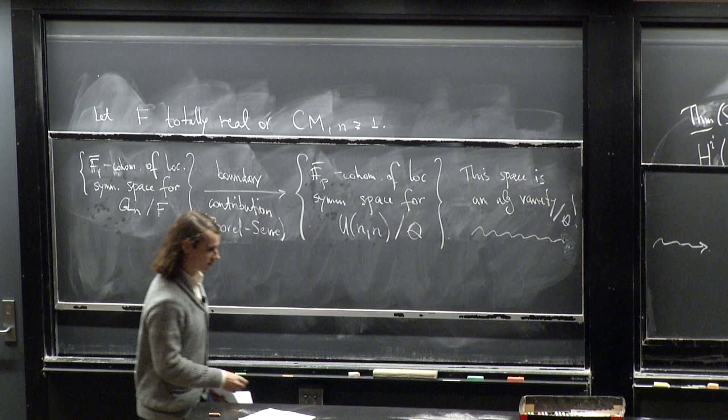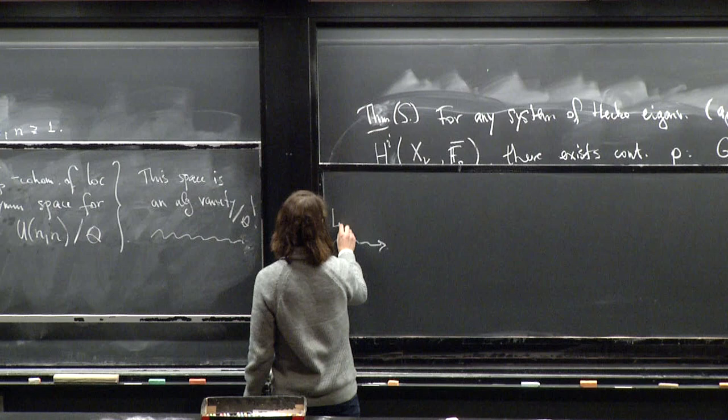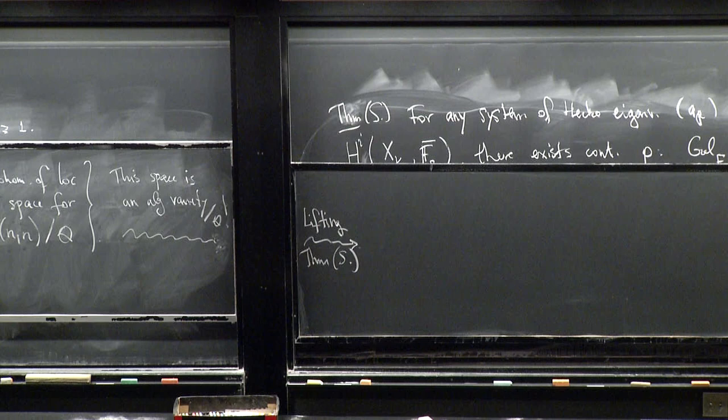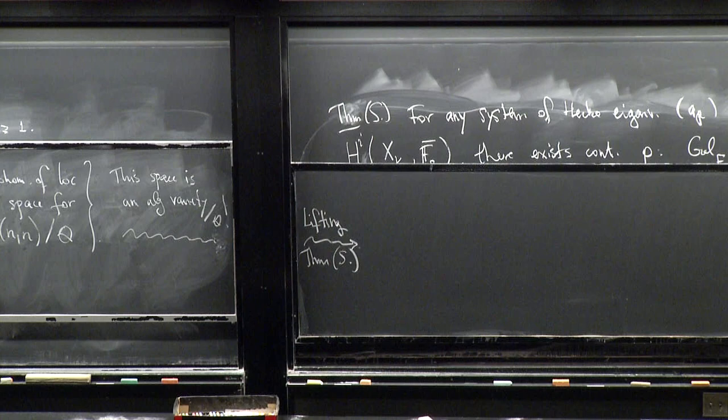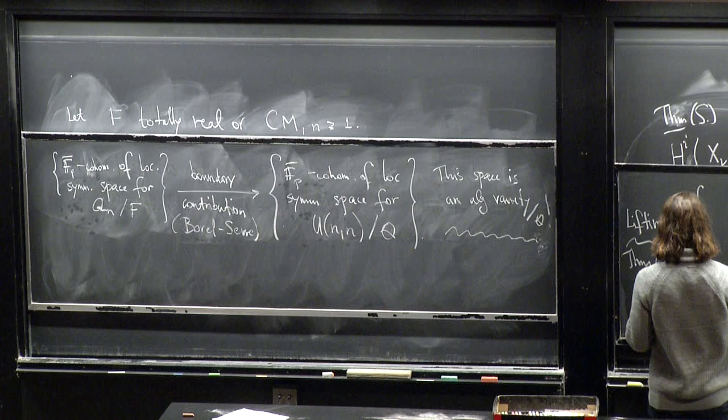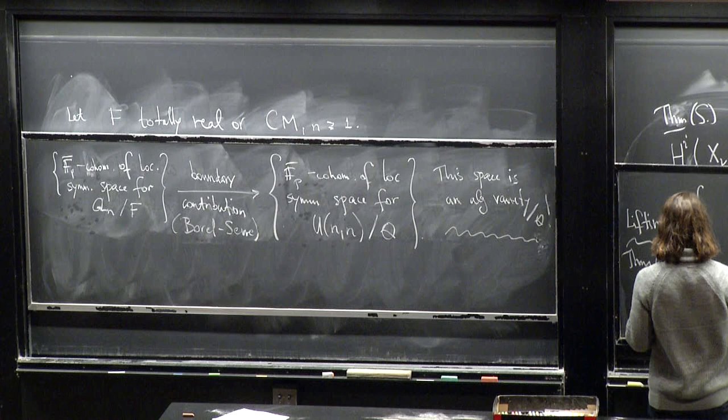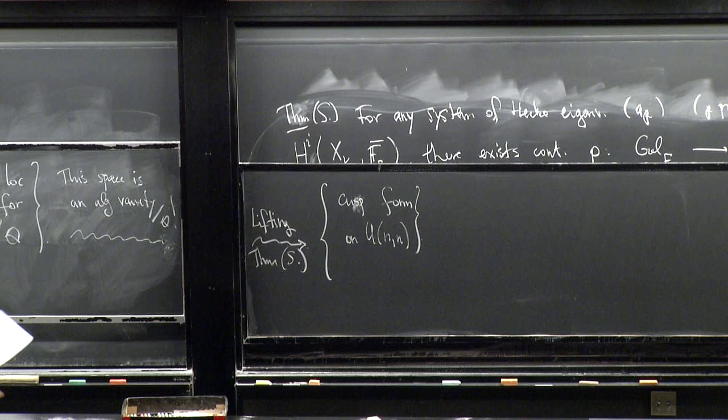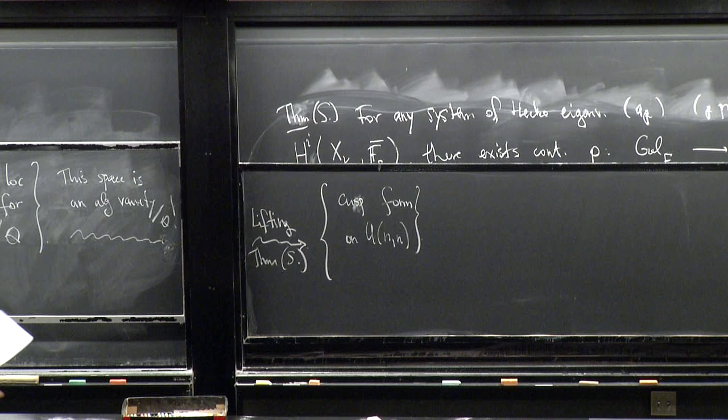So then comes the next step. And that's the only step to which I contributed. A certain lifting theorem, which tells you that whenever you're in the situation of some algebraic variety, technically called a Shimura variety, and you have some Hecke eigenclass mod p, you can always lift it to characteristic zero. You can always lift the Hecke eigenvalues to a system of Hecke eigenvalues to a cusp form on this UNN.